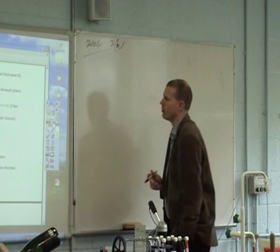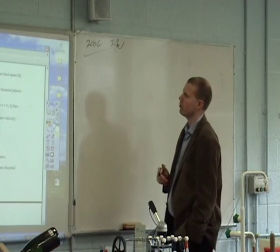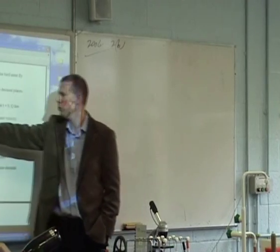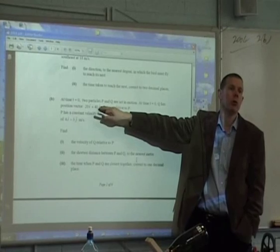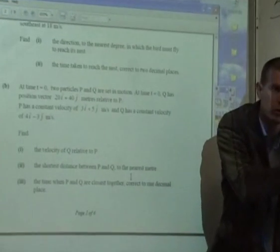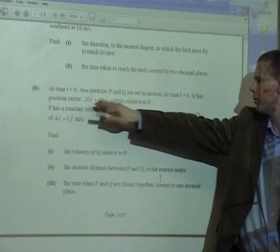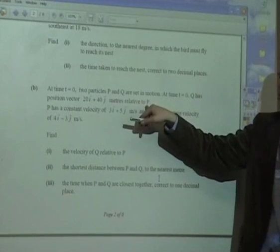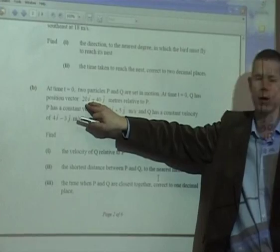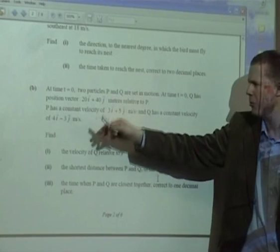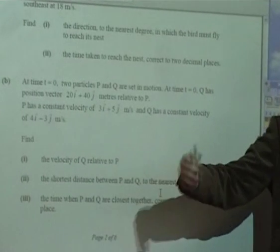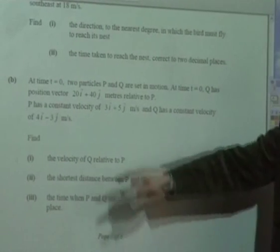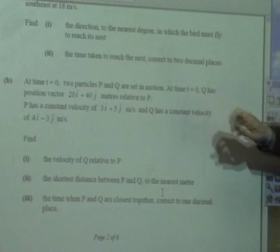At time t equals 0, two particles P and Q are set in motion. Q has a position vector 20i plus 40j. You don't tend to see this phrase too often, and as a result, if you haven't seen it before, it can throw you out, in which case you can end up not doing the whole question. All it's telling you is where Q is relative to P.